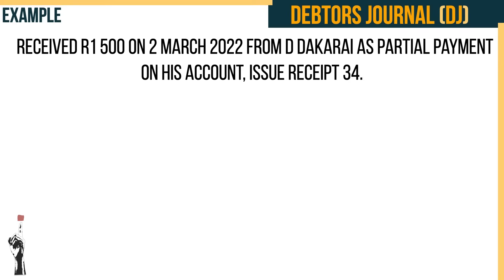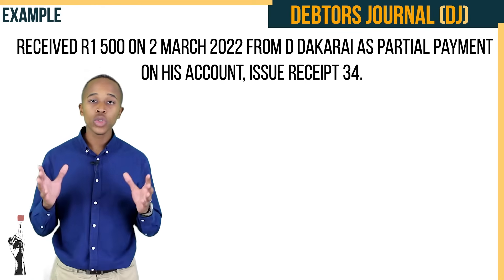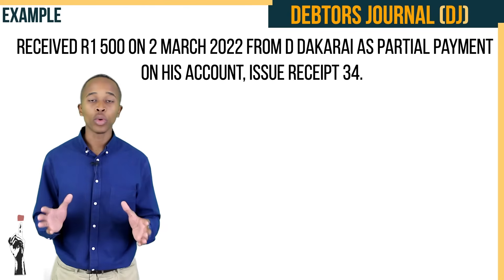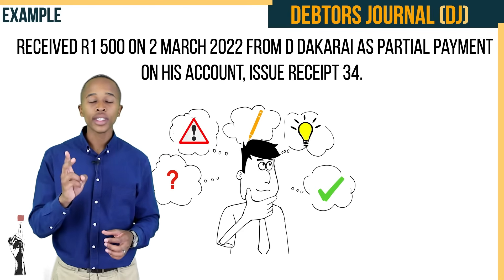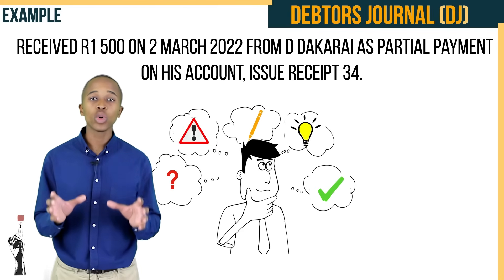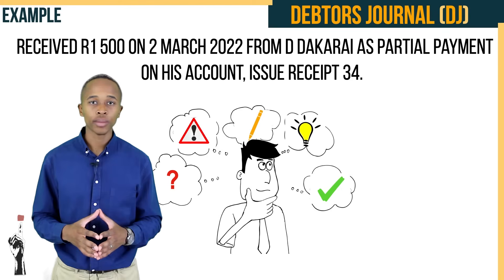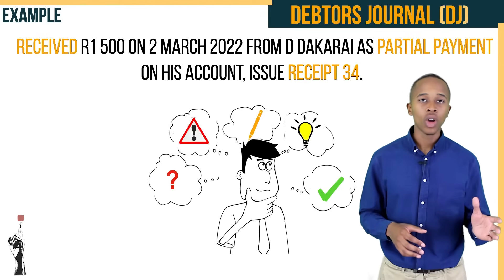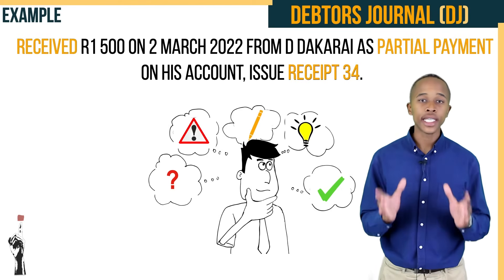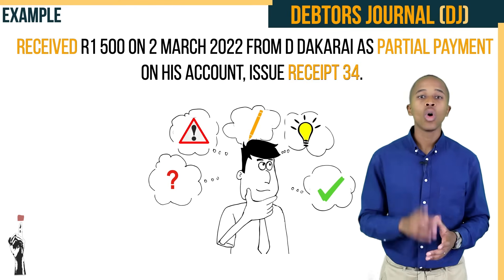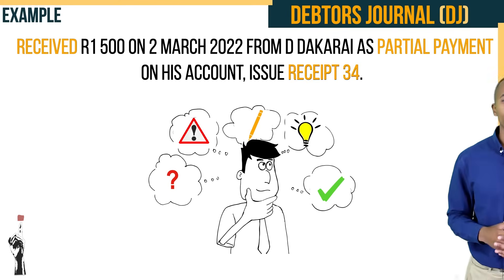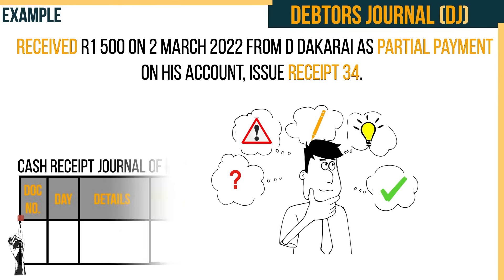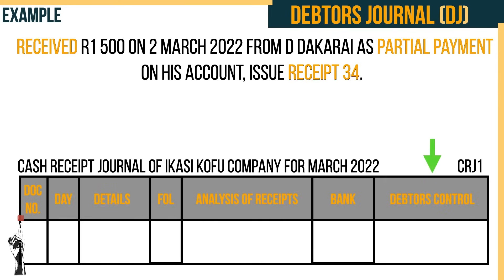Let's look at the following example: received R1,500 on the 2nd of March 2022 from D. Dakarai as partial payment on his account; receipt number 34 issued. Before we start, stop, evaluate, and circle the most important words. The words 'received,' 'partial payment,' and 'receipt number' all indicate that the debtor has paid off his account, or at least a part of it.